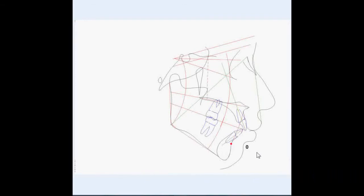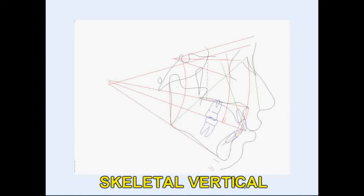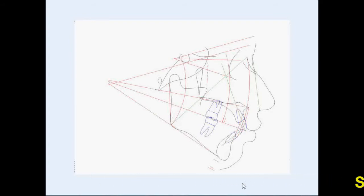The next question is the skeletal vertical. This can be different from the dental vertical. This is measured from the x-ray to determine if the patient has a skeletal open bite, deep bite, or normal vertical. Menton is used as the reference point. If Menton falls between the arcs, the patient has a normal skeletal vertical. If Menton is above the top arc, this is a deep bite case. If Menton is below the bottom arc, this is an open bite case.